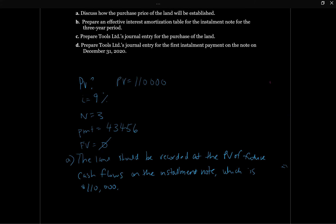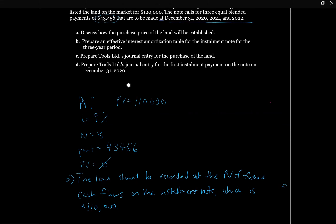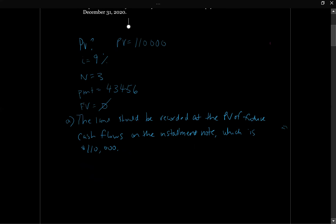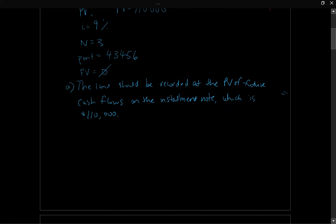The next thing we're asked to do is prepare an effective interest amortization table for the installment note for the three-year period. We've seen effective interest amortization tables before, and normally we set them up with columns for cash paid, interest, amortization of premium or discount, and carrying value.